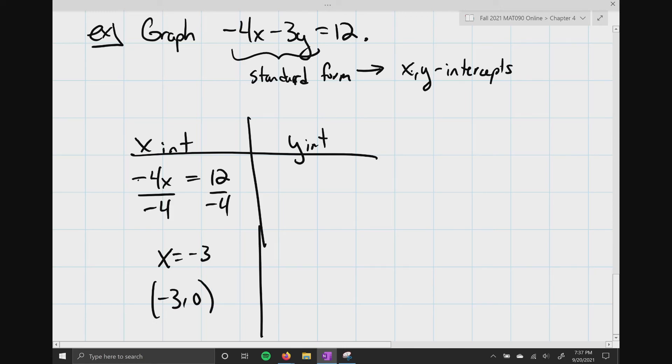Now, let's go ahead and do the same thing for the y-intercept. So, with a y-intercept, we know x is always equal to 0. So, that's going to yield negative 3y equals 12. Divide both sides by negative 3. You get y equals negative 4. So, my y-intercept is going to be 0 comma negative 4.